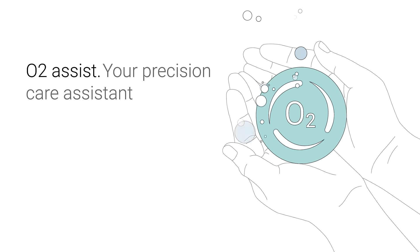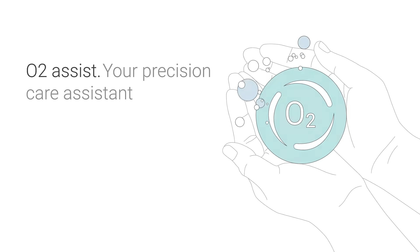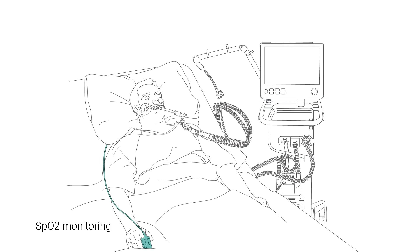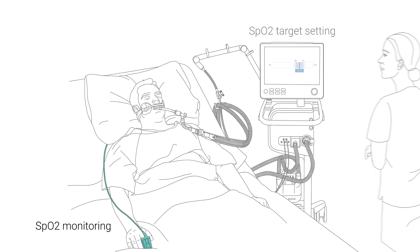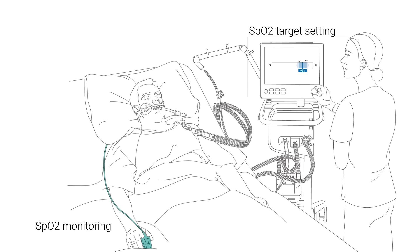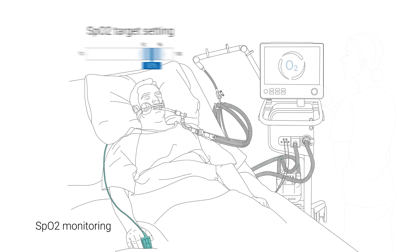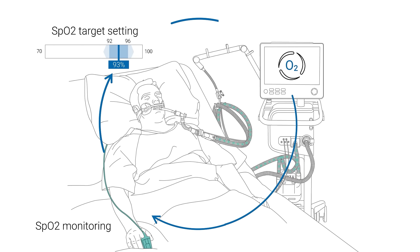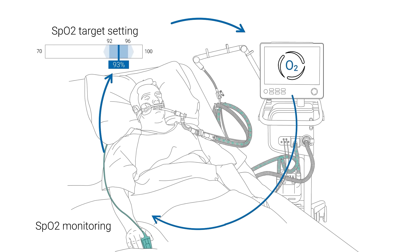What does O2 Assist do? O2 Assist continuously monitors patient SPO2 values, compares them with the SPO2 target range you have set for your patient, and adjusts oxygen delivery constantly to meet your patient's real-time needs.